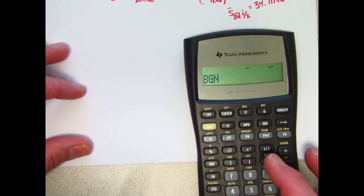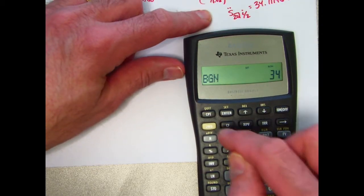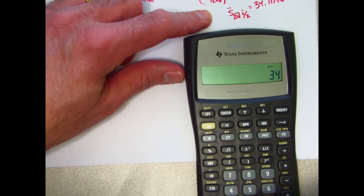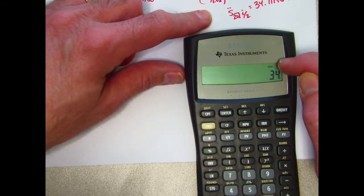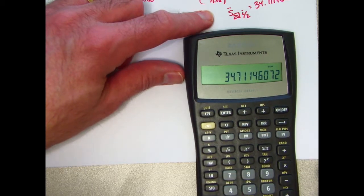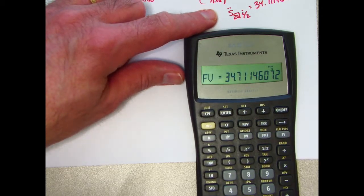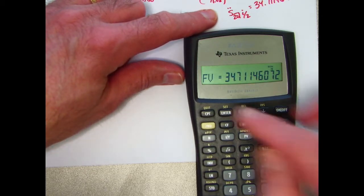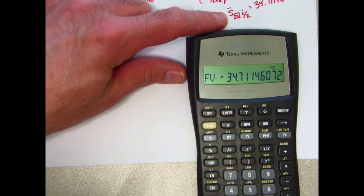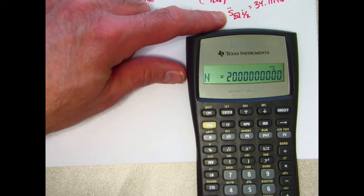So now go ahead and plug in this future value. 34 point, oops, not there, 34 point. You see the BGN up here as well, by the way. 71146072. That is the future value. I'm going to press the FV button. That quantity is now stored in the variable called FV. We've got 20 payments. N is 20. Press the N button. That's stored in N now.